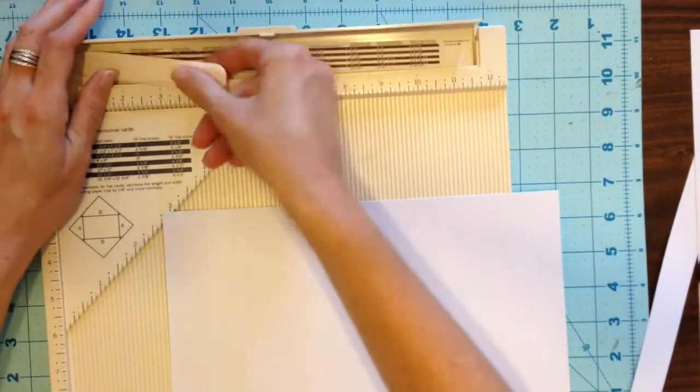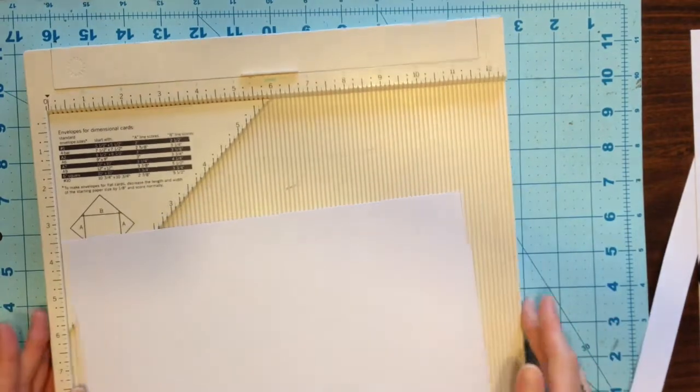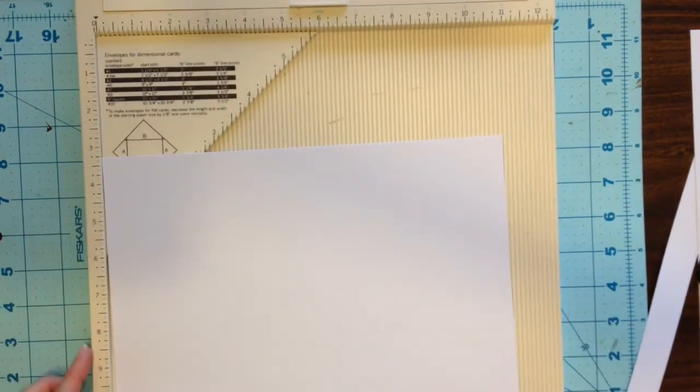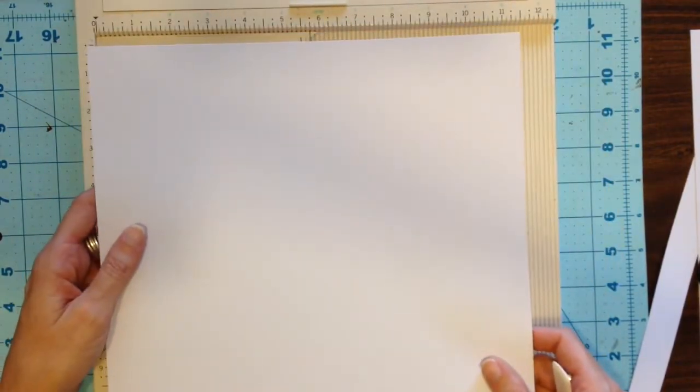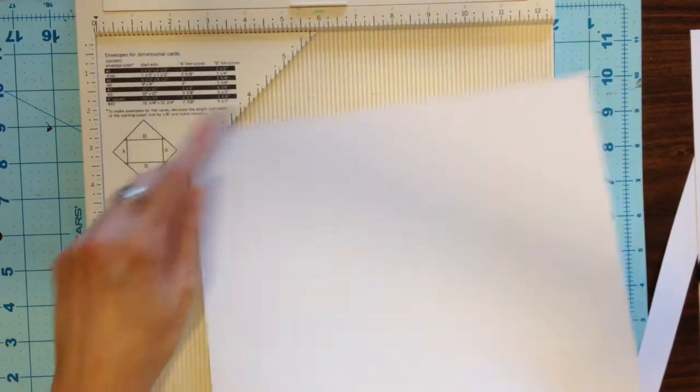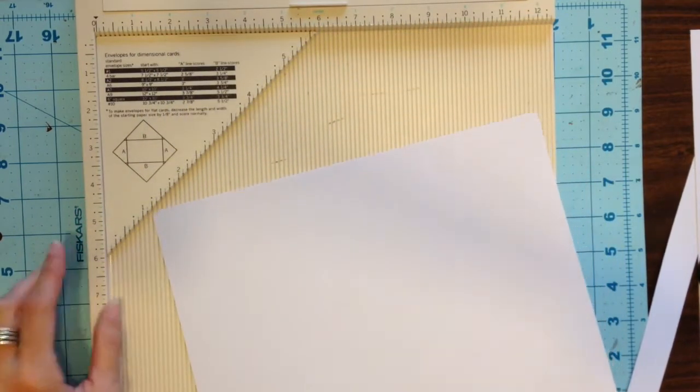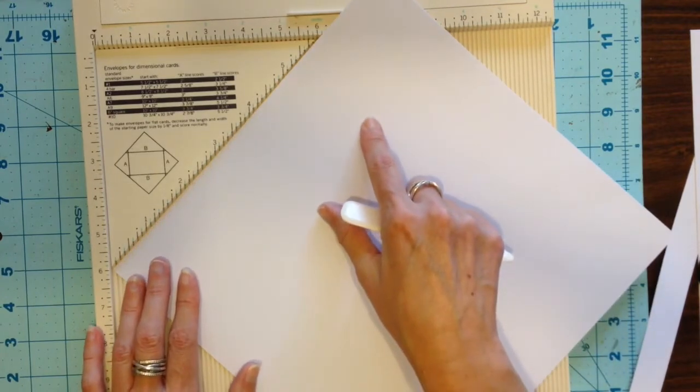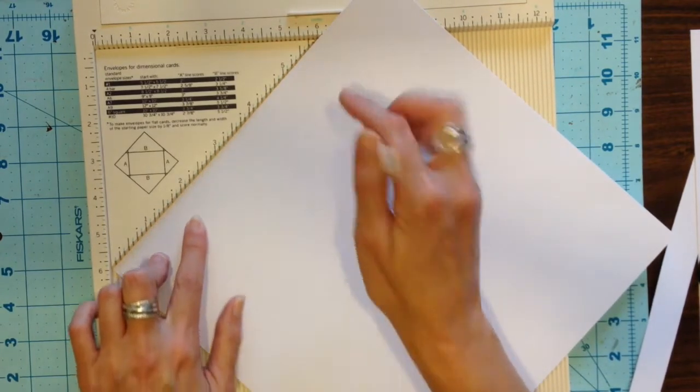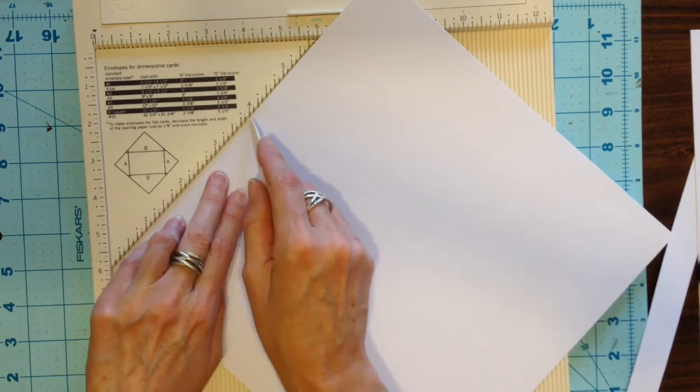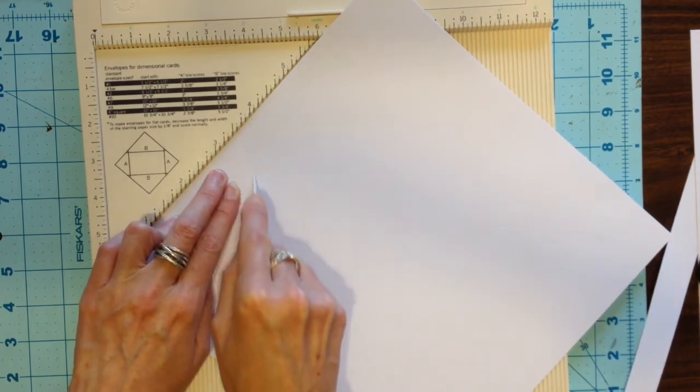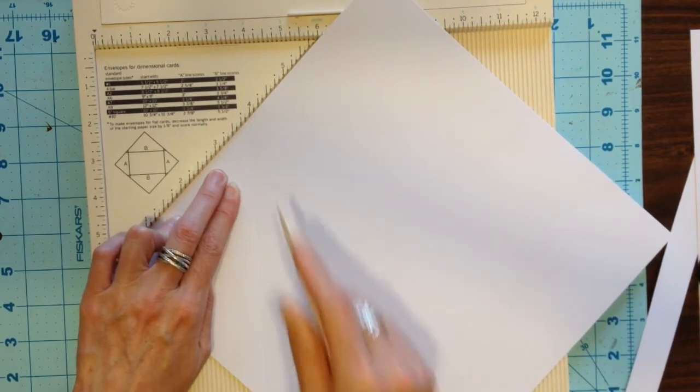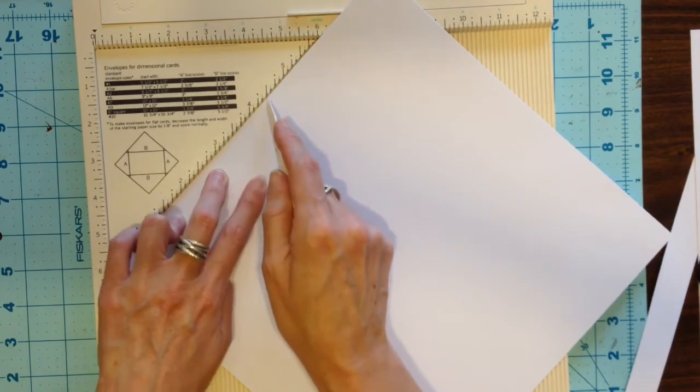Now what you'll need to do is rotate your paper so that it is in line with this diagonal edge. For the first score we're going to score at four inches and for the second score four and a half.